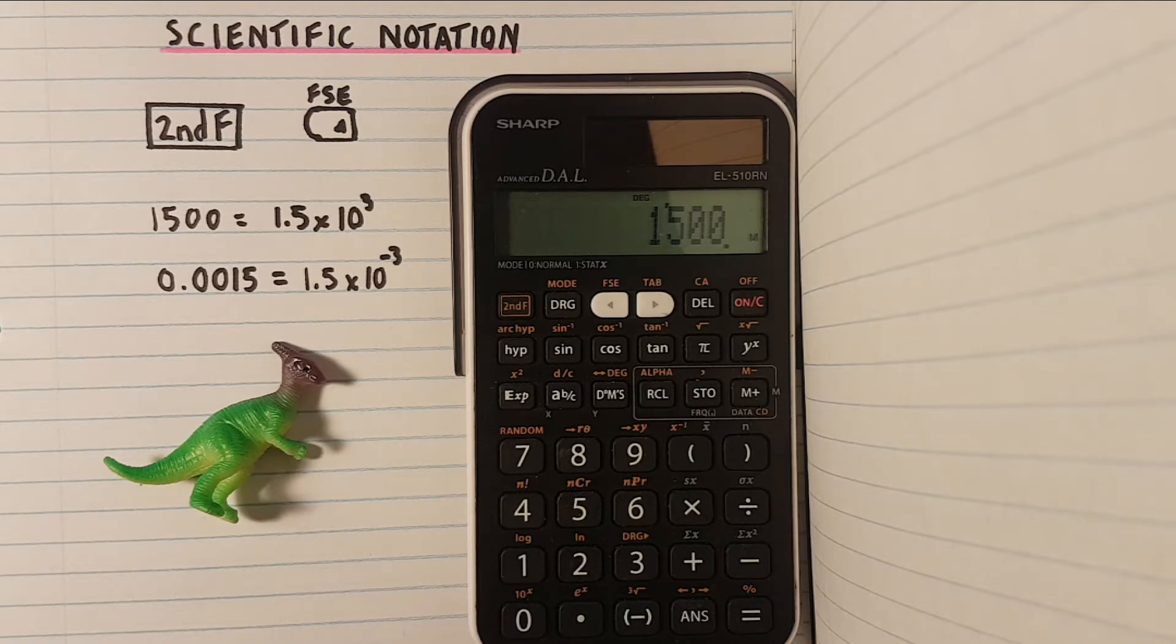Now scientific notation is a handy way to simplify numbers that are either very large or very small, but it's not a mode a lot of people are aware of on this calculator and can come as a surprise.